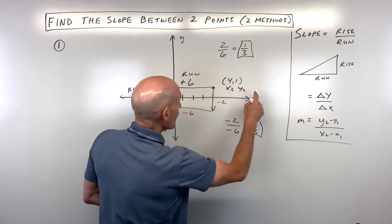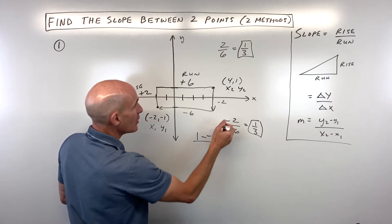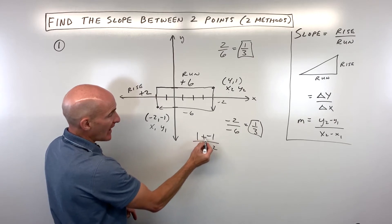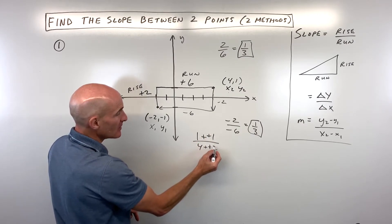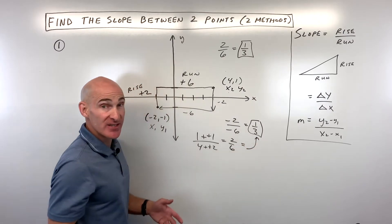So we're going to say negative 1 minus negative 1, that's the change in the y's, over 4 minus negative 2. Remember when you subtract it's like adding the opposite. So we're getting 2 over 6, which is equal to one third. Same slope.